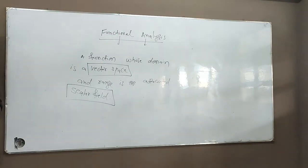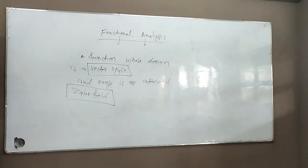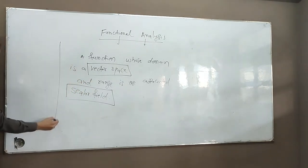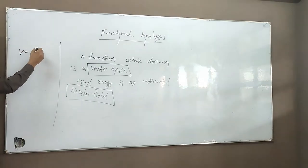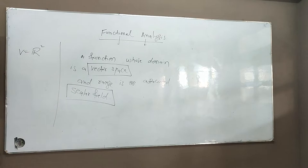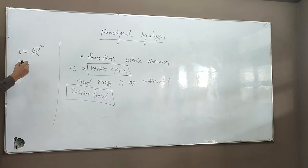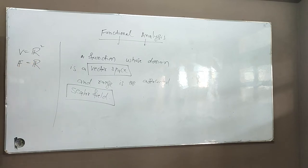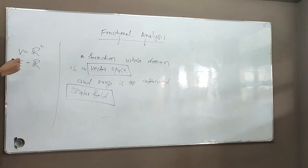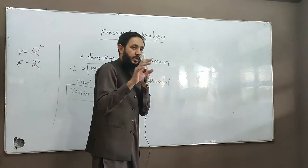Can you give me an example of a vector space? Suppose R squared — we know that this is a vector space. And suppose the field we take with it is R. So I have taken an example of a vector space. You may ask me, sir, how do you give a function with a vector space domain and range R? My dear student, please focus on the board — I'm going to give you a simplest example of a functional.